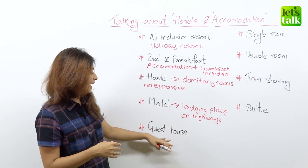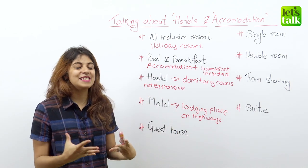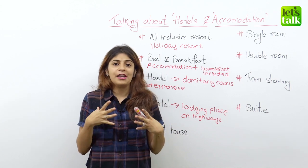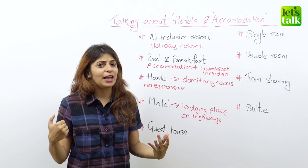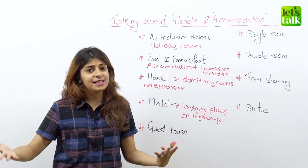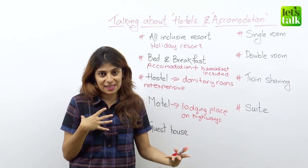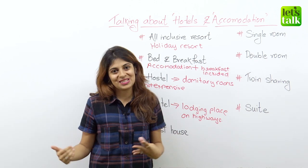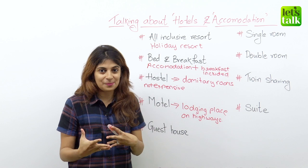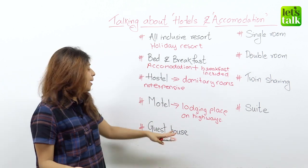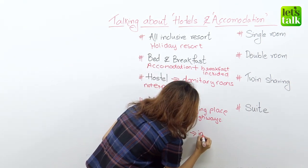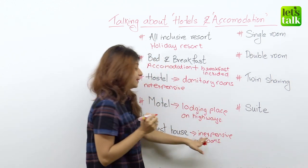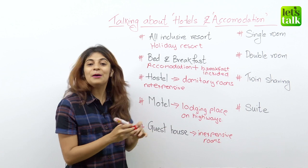Another type of accommodation is a guest house. A guest house is usually a private home which is converted for guest lodging. So for example, if I have a big house and I would like to convert a couple of rooms into a guest house, then of course it is a profitable business for me. I will rent out the rooms as a guest house for guests to stay. A guest house is not very expensive like luxurious hotels — it's quite inexpensive with rooms available in a private home.